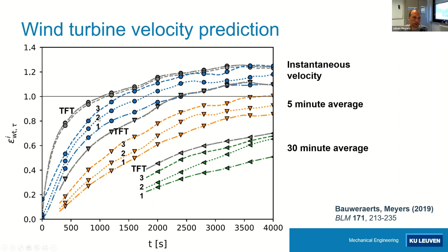Grid levels two and three get a bit worse in prediction quality, but they still remain reasonably okay up to about a thousand seconds. We also compared with the Taylor frozen-turbulence hypothesis, and you see that the LES beats Taylor frozen turbulence in terms of quality of the prediction. You can also look at a five-minute time-averaged wind turbine velocity — you can predict further in time — and with a 30-minute average, you can predict even further. Depending on what you exactly need, you may be able to predict over a longer time horizon.